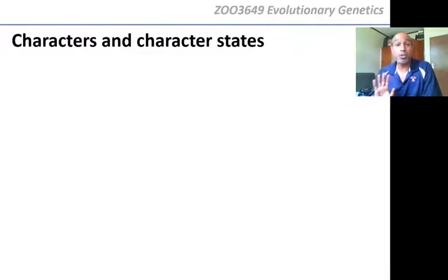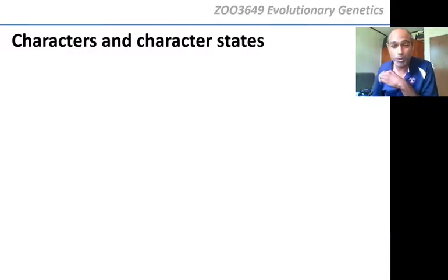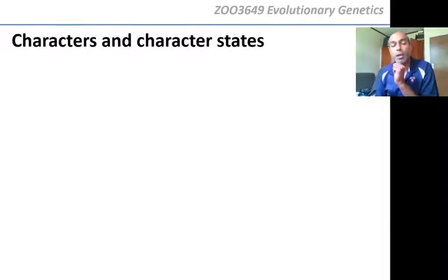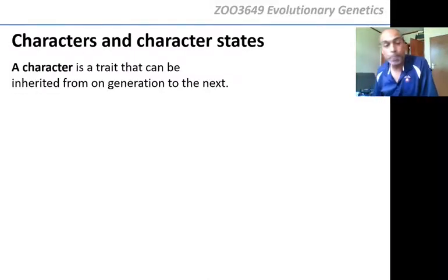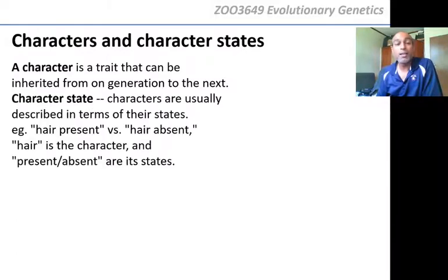Let us start with traits. Remember when we started this section we started with traits — homologous traits, analogous traits. When we're building trees, we call traits 'characters.' A character is nothing more than a trait — a trait that can be inherited from one generation to the next. In other words, it is a homologous trait, because it is inherited through common ancestry.